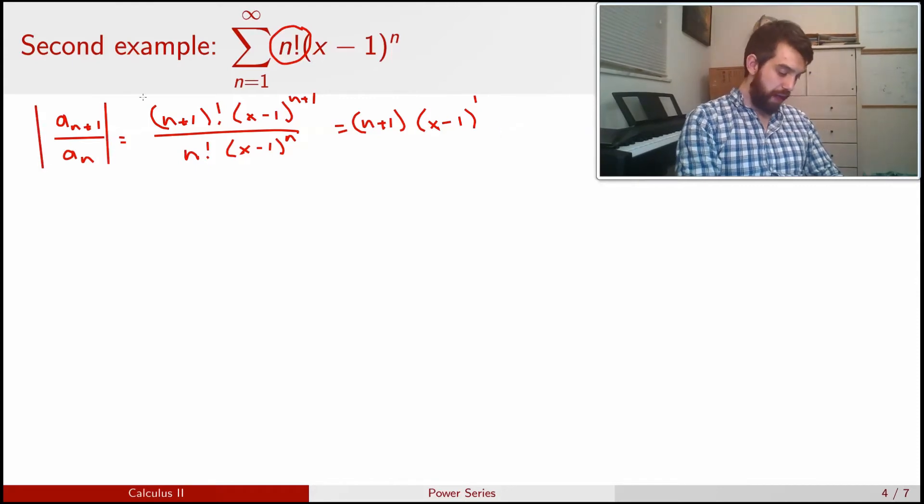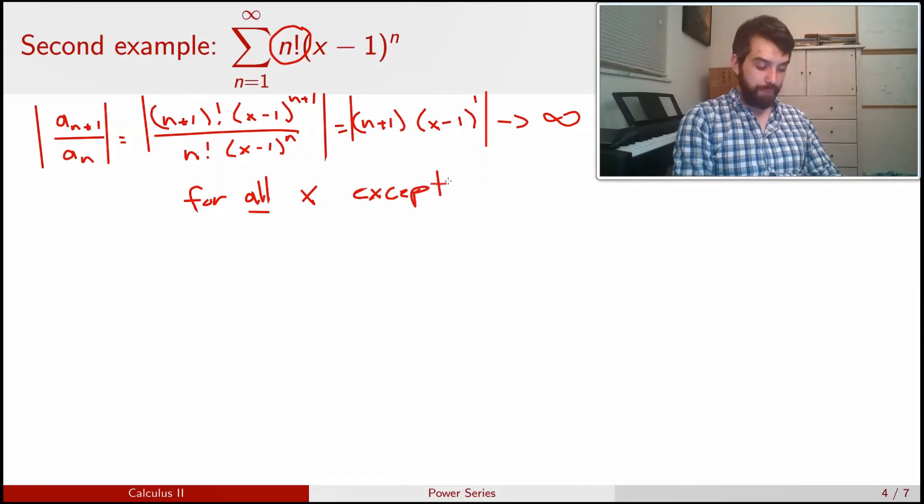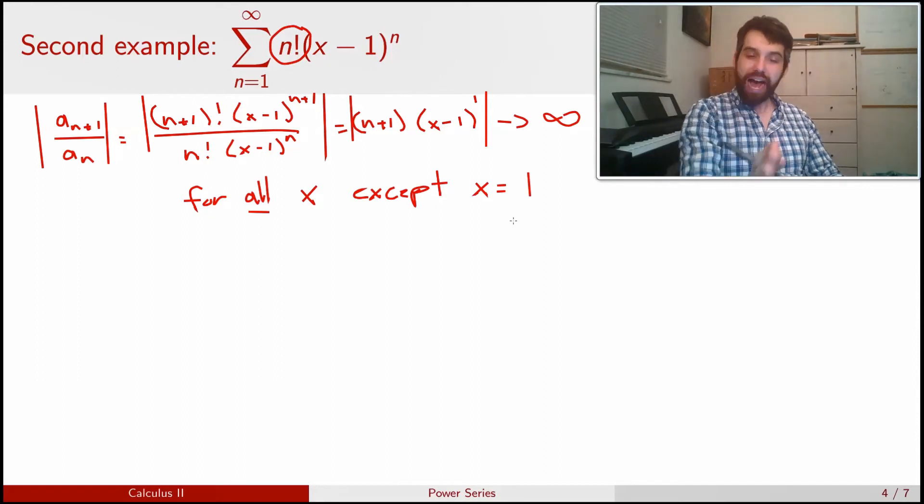And then (x - 1) to the (n + 1) divided by (x - 1) to the n, I'm just left with a single copy, (x - 1) to the power of 1. And this ratio that I have, if I put absolute values around everything, so it doesn't matter about the sign, this is for sure going to diverge to infinity for all values of x except 1, except the case where x is equal to 1. Reason being, if x is exactly equal to 1, then (x - 1) is just 0, and so this is some 0 plus 0 plus 0, it clearly converges to 0.